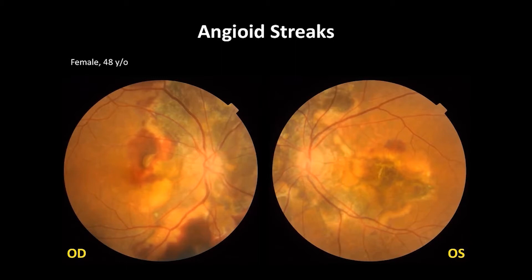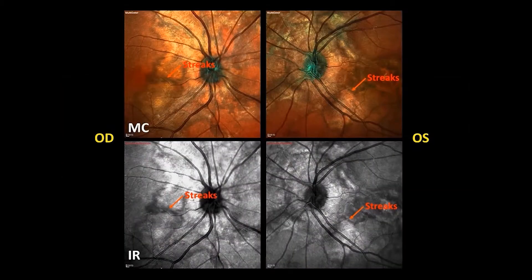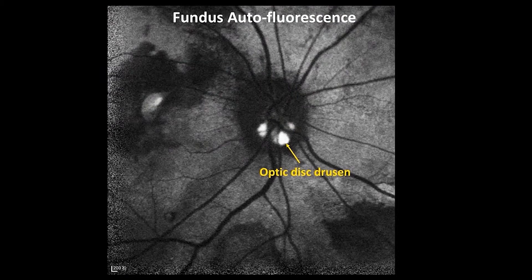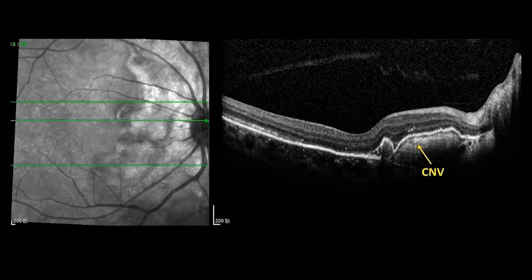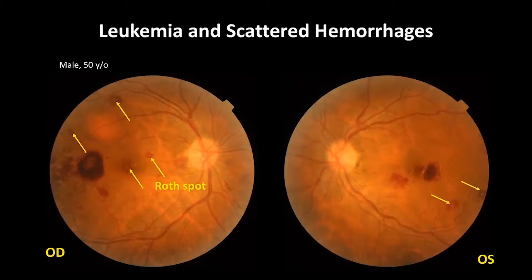In angioid streaks, multicolor imaging is able to demonstrate the streaks better than color fundus photo. Fundus autofluorescence and OCT showed the optic disc drusen. OCT found CNV as well.